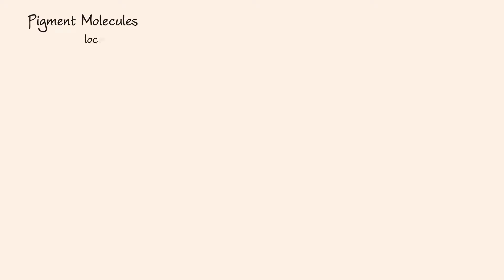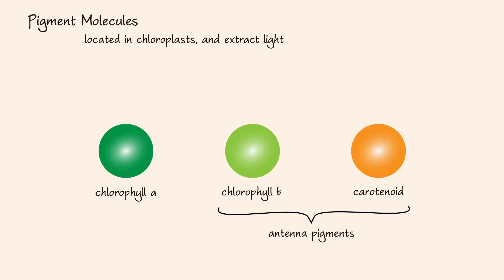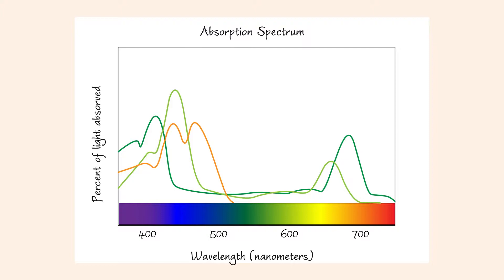Light is absorbed by pigment molecules located in the chloroplasts. There are different types of pigment molecules, including chlorophyll A, chlorophyll B, and carotenoids. Chlorophyll B and carotenoids are classified as antenna pigments. Each pigment absorbs light of different wavelengths. The absorption spectrum shows different wavelengths of light in nanometers on the x-axis and the percent of light absorbed on the y-axis. Chlorophyll A and chlorophyll B absorb violet-blue and orange-red light.